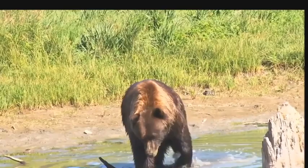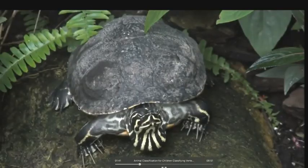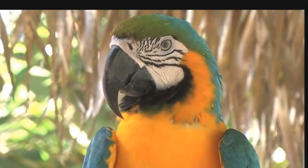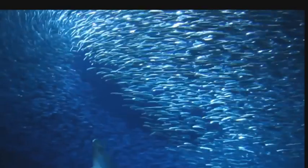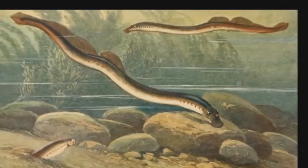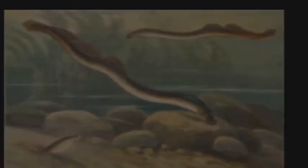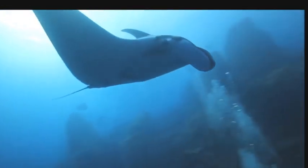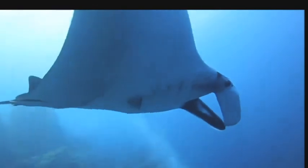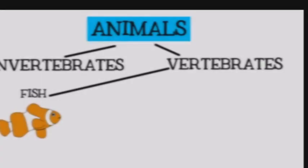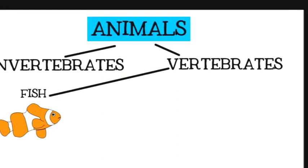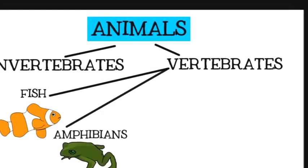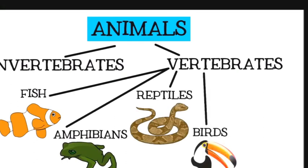Vertebrates make up less than 5% of all animal species on Earth. Vertebrates are divided into different classes. Several classes are specific types of fish - for example, jawless fish like lampreys and hagfish, and cartilaginous fish like sharks and rays. These are usually lumped together with bony fish and just called fish. The four remaining classes are amphibians, reptiles, birds, and mammals.